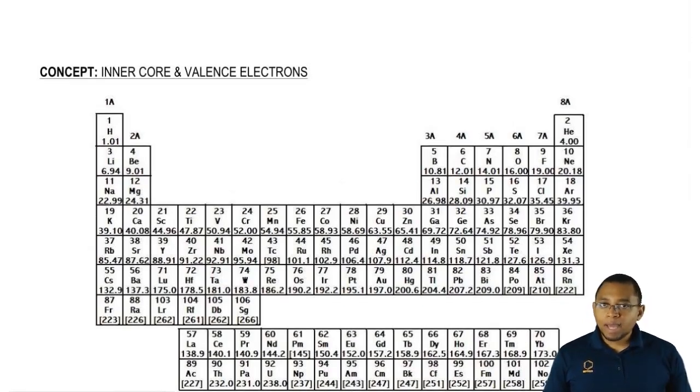We're going to say that main group metals, whatever your main group metal number is, that's also the number of valence electrons that element has. What do I mean by this?